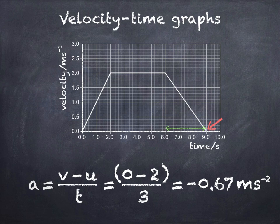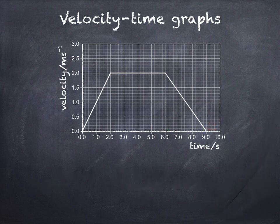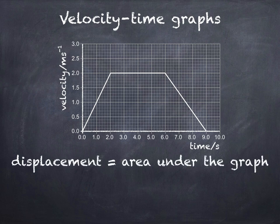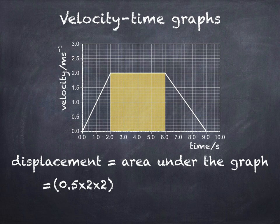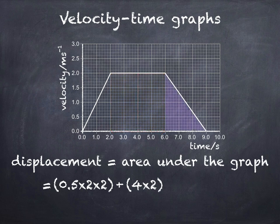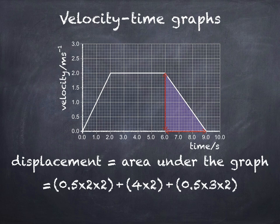I'll now go over how to find displacement from our velocity-time graph. To do that, we need to find the area under the graph, and we split this area into triangular and rectangular shapes. For the first two seconds, the area under the line is a triangle, so its area is half times the base times the height, which gives us 0.5 × 2 × 2. The next section, from 2 to 6 seconds, is a rectangle, and its area is the base times the height, which is 4 × 2. The last section is a triangle again, so its area is 0.5 × 3 × 2. If we add up all three areas, we get a displacement of 13 meters.